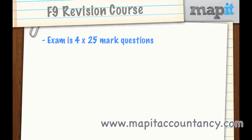The exam is four questions of 25 marks each. That's different from other exams like F7 and F8, because those exams have five questions and they could be differing numbers of marks depending on what the examiner wants to do. Also, each of those exams has questions that are specific — question one will always be in a certain format for F7 and F8, and question two will be in a certain format. That's not the same for F9, where each question can be from any syllabus area.